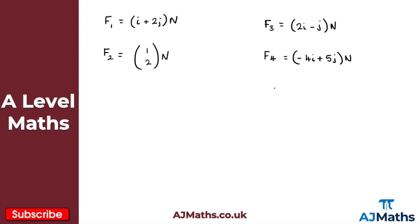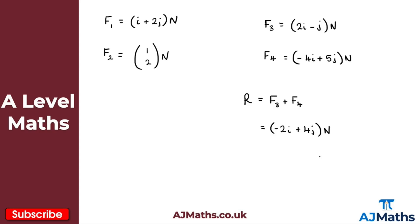The resultant of F3 and F4, which I'll call R, equals F3 plus F4. Adding the i components: 2i plus minus 4i gives minus 2i. Adding the j components separately: 5j minus j gives plus 4j. The resultant is also a force, so we present it in newtons.